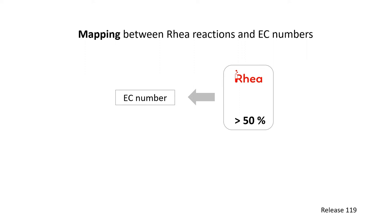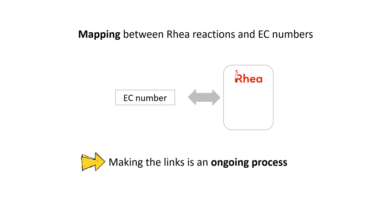Some spontaneous reactions, for example, will never get an EC number. Making links in both directions is an ongoing process.